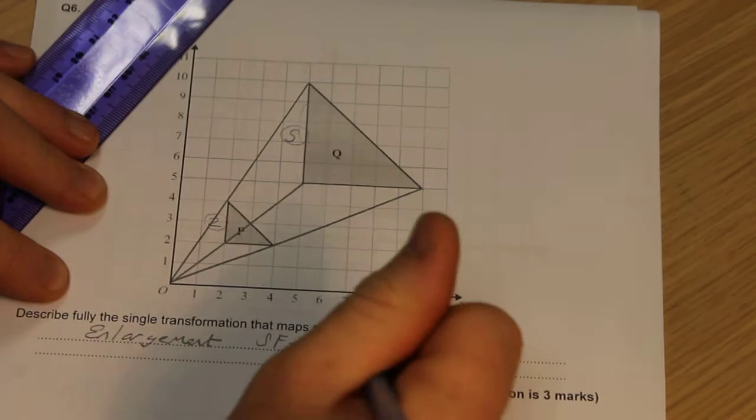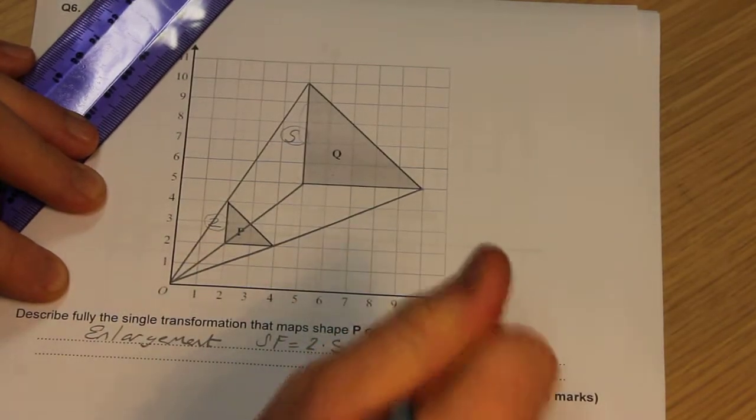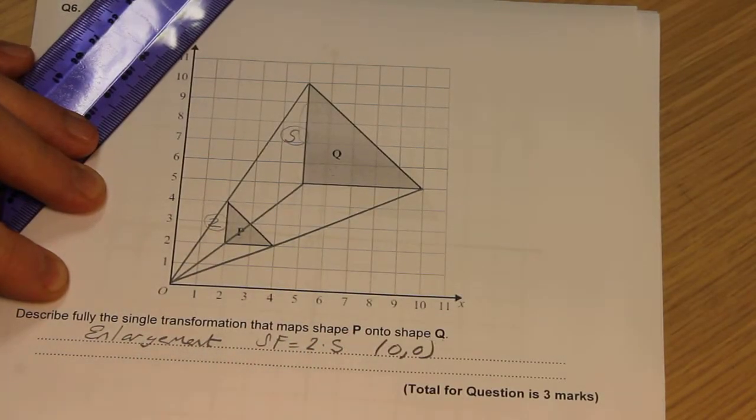And the corners—you can see where this thing all comes from. It comes from the point (0, 0). That is the centre of enlargement.